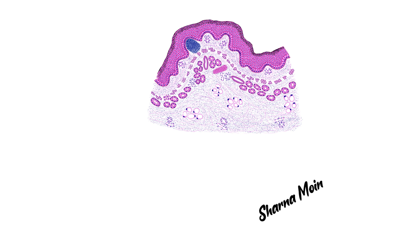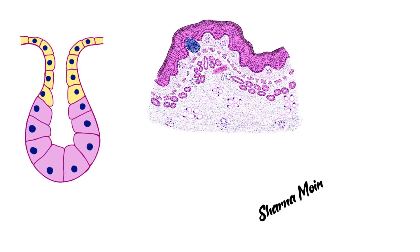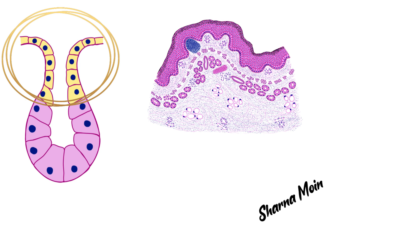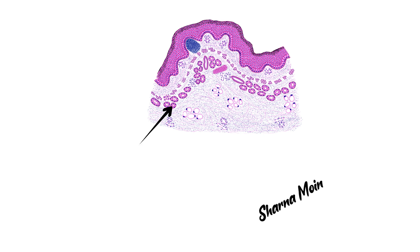The next layer below the mucosa is the submucosa. It is also a connective tissue layer, so it obviously contains connective tissue cells, connective tissue fibers, arterioles, venules, lymphatics, and nerves. It also contains glands known as the esophageal glands. These glands secrete mucus and have two portions: the secretory portion known as the mucous acini, and the excretory portion known as the excretory duct. The mucus secreted from these glands lubricates and protects the mucosa. You can also see a nerve plexus here — this is the submucosal plexus or Meissner's plexus — which controls the esophageal glands and blood flow in this region.